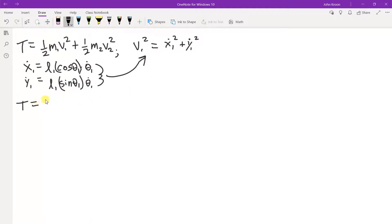You get T equals 1 half m1 L1 squared theta 1 dot squared plus 1 half m2 L1 squared theta 1 dot squared plus L2 squared theta dot 2 squared. These are the angular momenta. This is like 1 half i omega squared. Let me draw this a little lower. We'll get to that more in a moment.